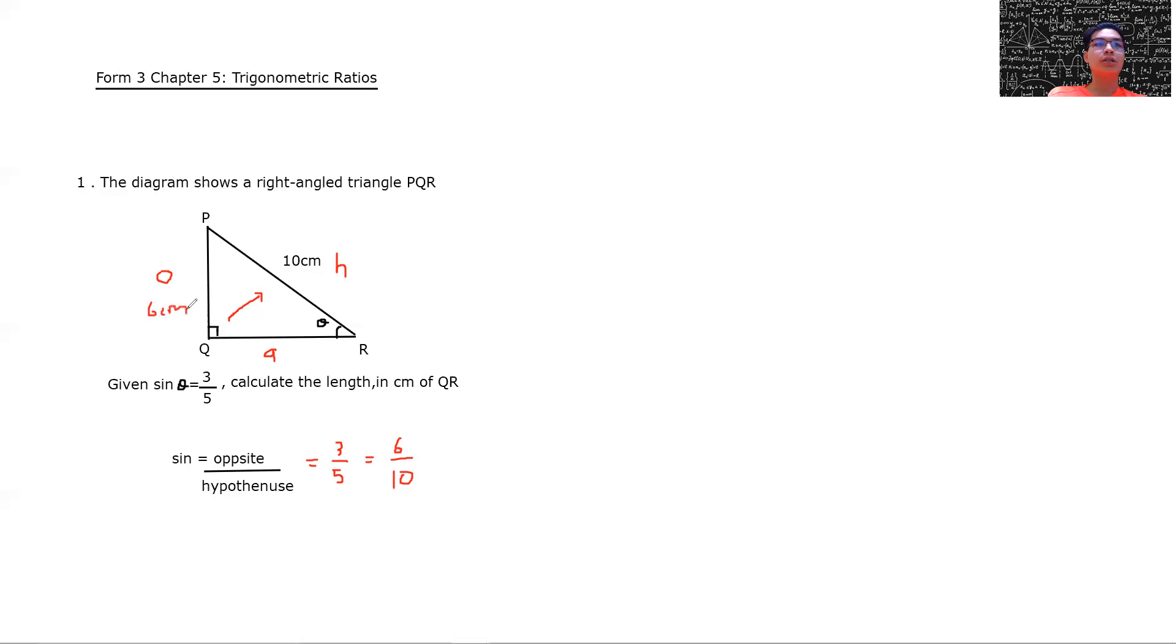But the question here is asking us to find the length of QR, not the length of PQ. So right now, what we do is, we take this square root with the formula of square root, hypotenuse, the longest minus the short. So here, so here is 10 square minus 6 square. Okay, so this is the formula of square root and then 10 square minus 6 square in order to find the length of QR.